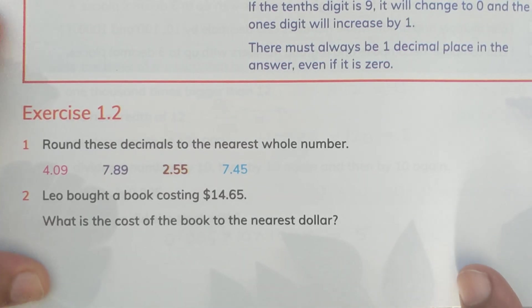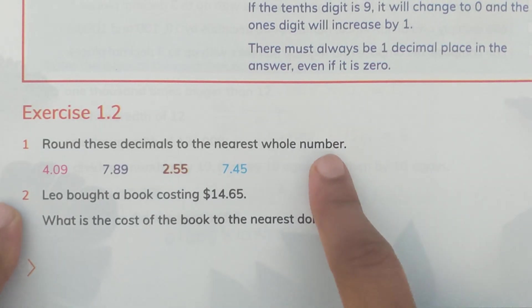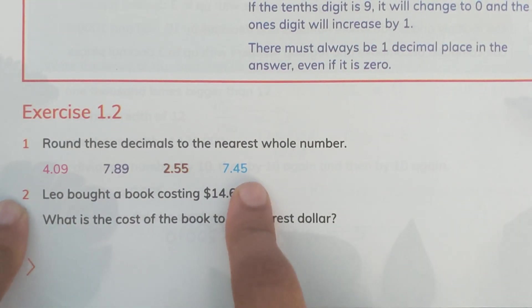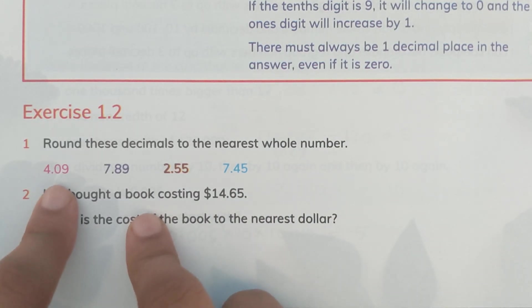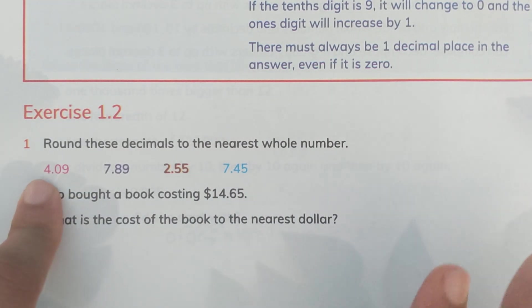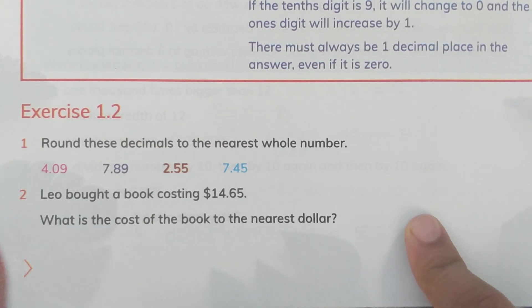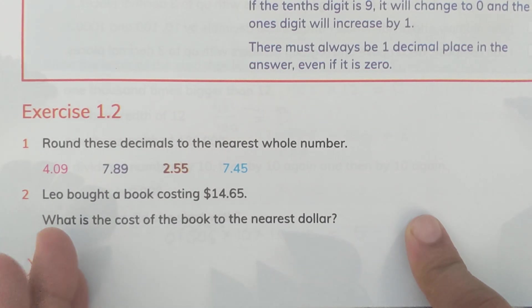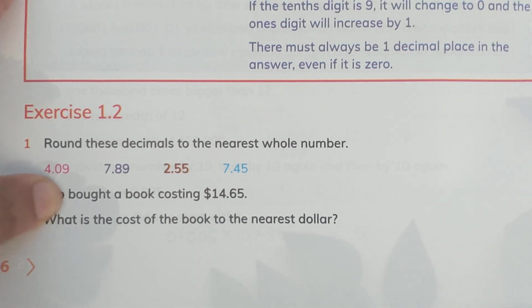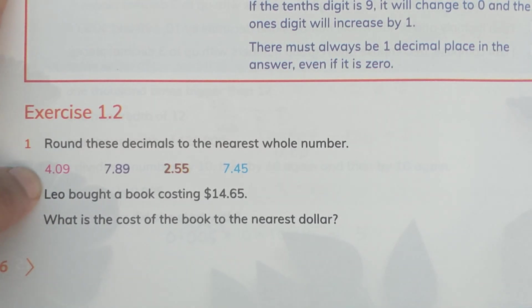In question number one, it says round these decimals to the nearest whole number. This means we have to remove the decimal places, since a whole number has no decimal. We keep the whole number as it is — the last unit digit remains in place — and remove all decimal places. But we also have to look at the digit right after the decimal point, which is the tenths place. If it is a special digit, we add one to the whole number; if not, the whole number remains the same.